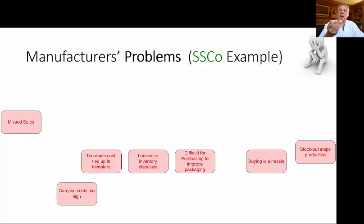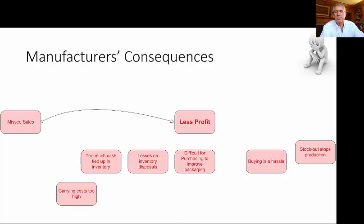Let's start to connect the elements based on our understanding of cause and effect. So where to start? Well, it seems clear that missed sales results in less profits, right? And it turns out that most of our problems have an impact on profits. Maybe buying is a hassle connects up too, but it isn't so clear how. So we'll only make obvious connections.